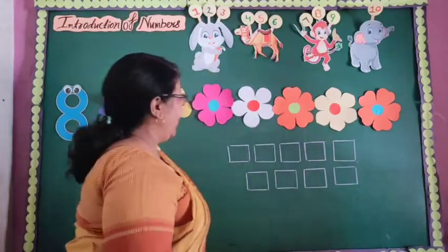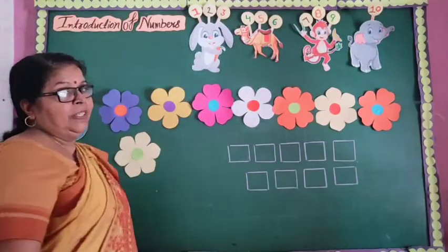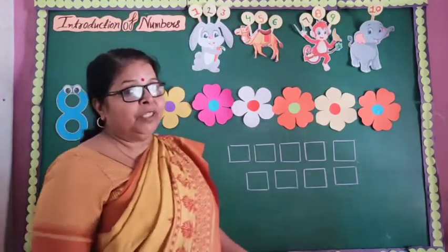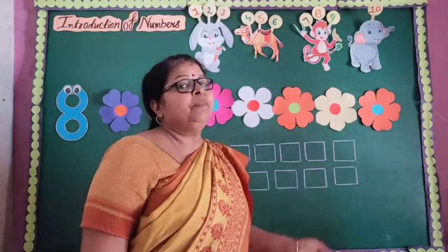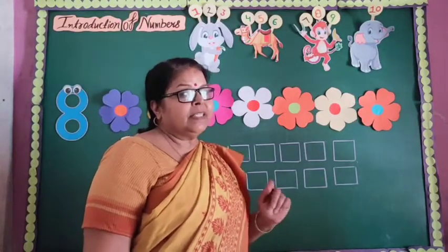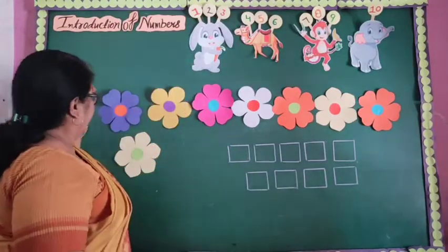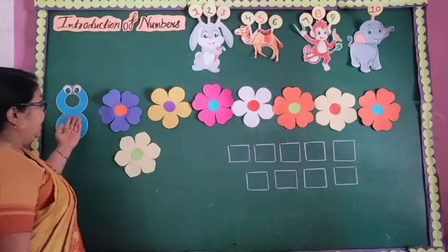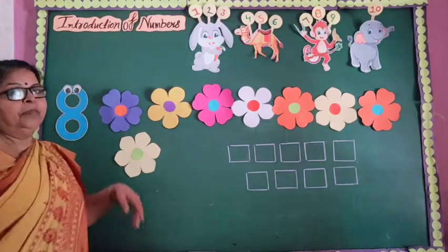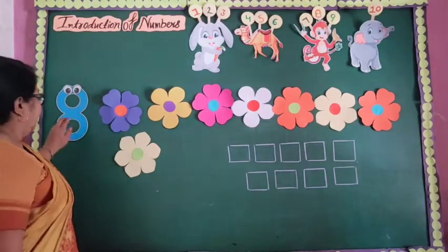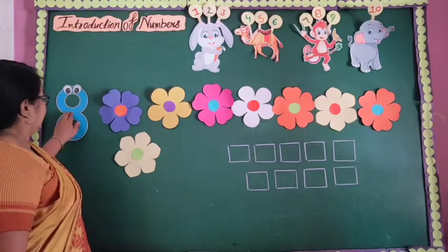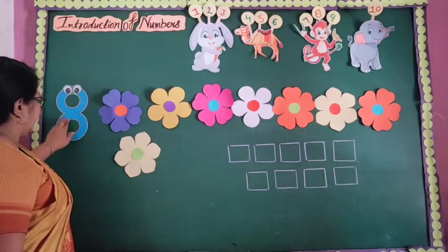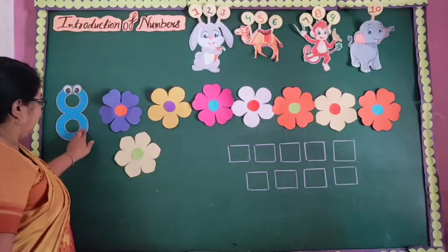1, 2, 3, 4, 5, 6, 7, 8. 1, 2, 3, 4, 5, 6, 7, 8. It is the number 8. It is the number 8. I like to press it like this. Ok?